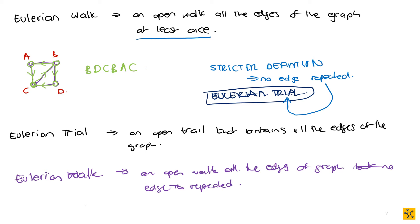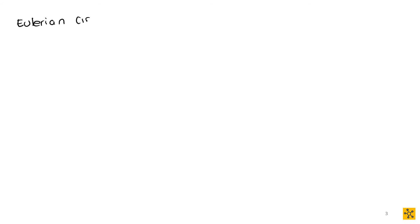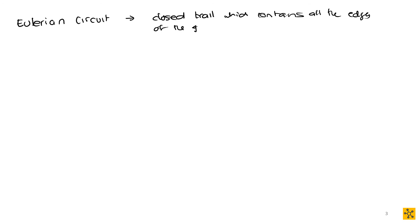Next we have the Eulerian circuit. Think about what a circuit is — it is a closed trail. So the Eulerian circuit is a closed trail which contains all the edges of the graph. Because it is a trail, there are no repeated edges. The beginning and end vertices are the same, and it goes through the graph in such a way that it covers all the edges.